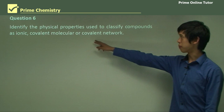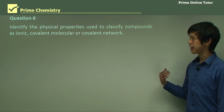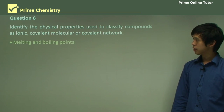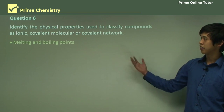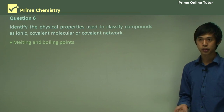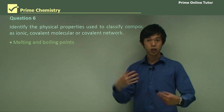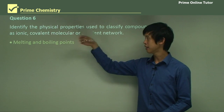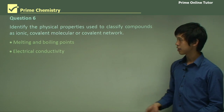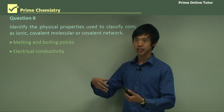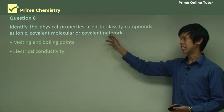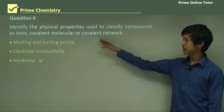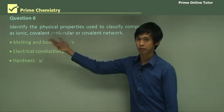Question: Identify the physical properties used to classify compounds as ionic, covalent molecular, or covalent network. Melting and boiling points are one — covalent network and ionic have different boiling points, and if a substance has a very low melting and boiling point you'd assume it's covalent molecular. Electrical conductivity is another — if you can dissolve it and it conducts electricity, it's ionic; neither covalent type conducts at all. And hardness — covalent network is harder than covalent molecular.